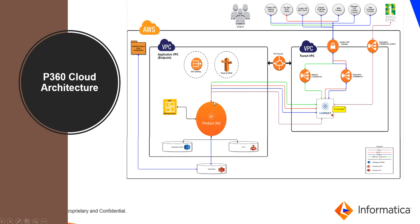The main product components are hosted across multiple EC2 instances, where each instance holds a different P360 component. One is for the P360 server, another for ActiveOS, one for P360 BPM, another for media manager and the process engine, and another for SupplierPort. This application VPC contains these core components and is where load balancing occurs as requests are routed from the internet or through the gateway.